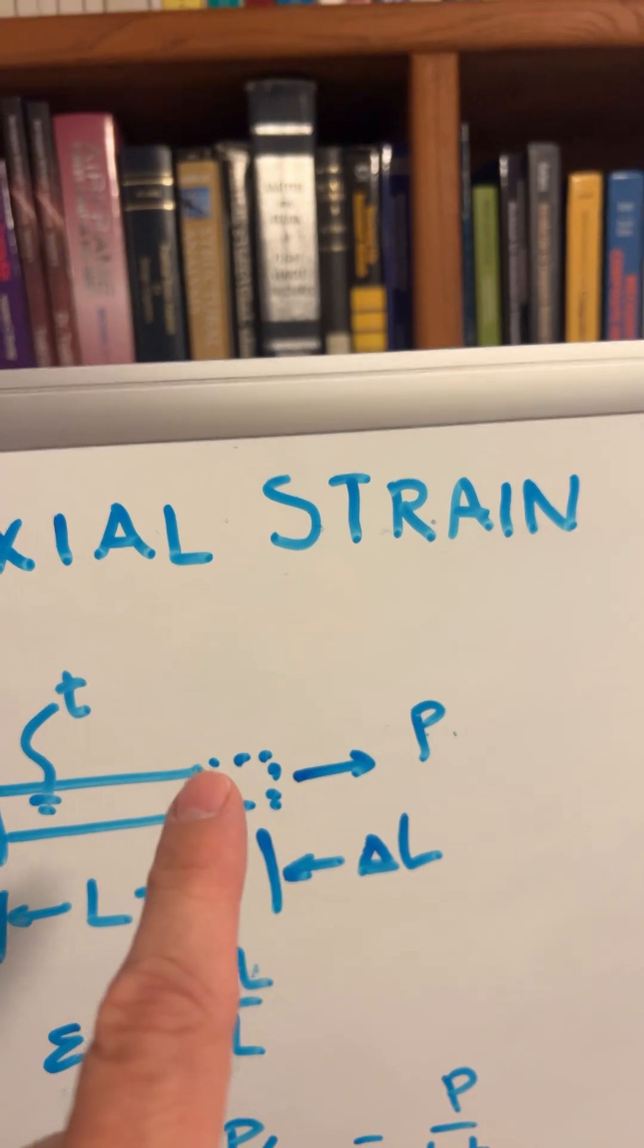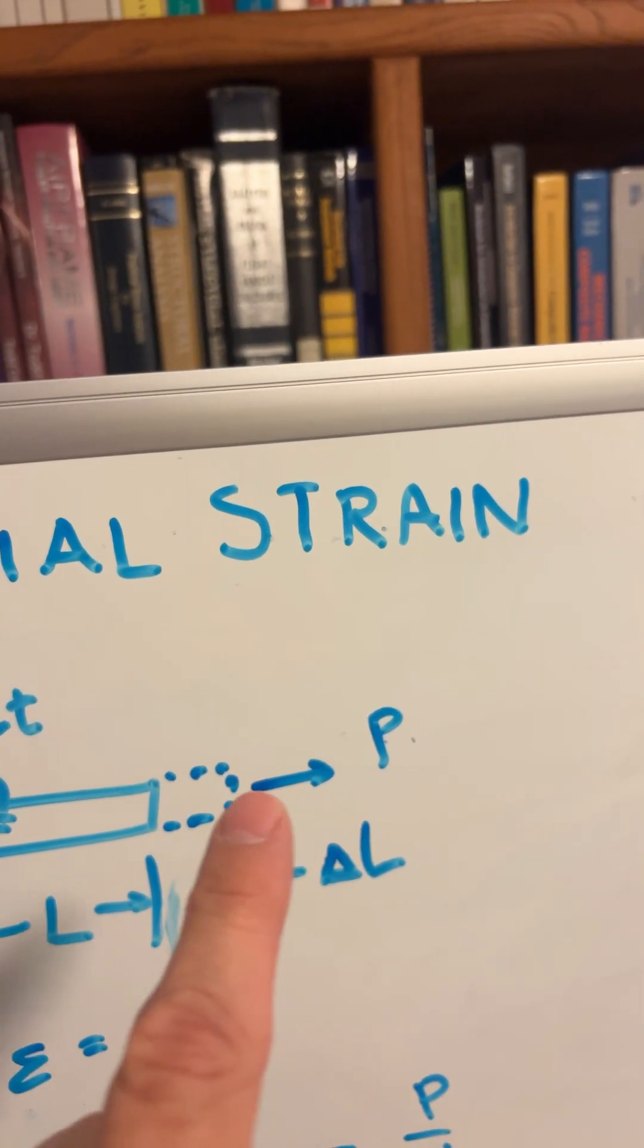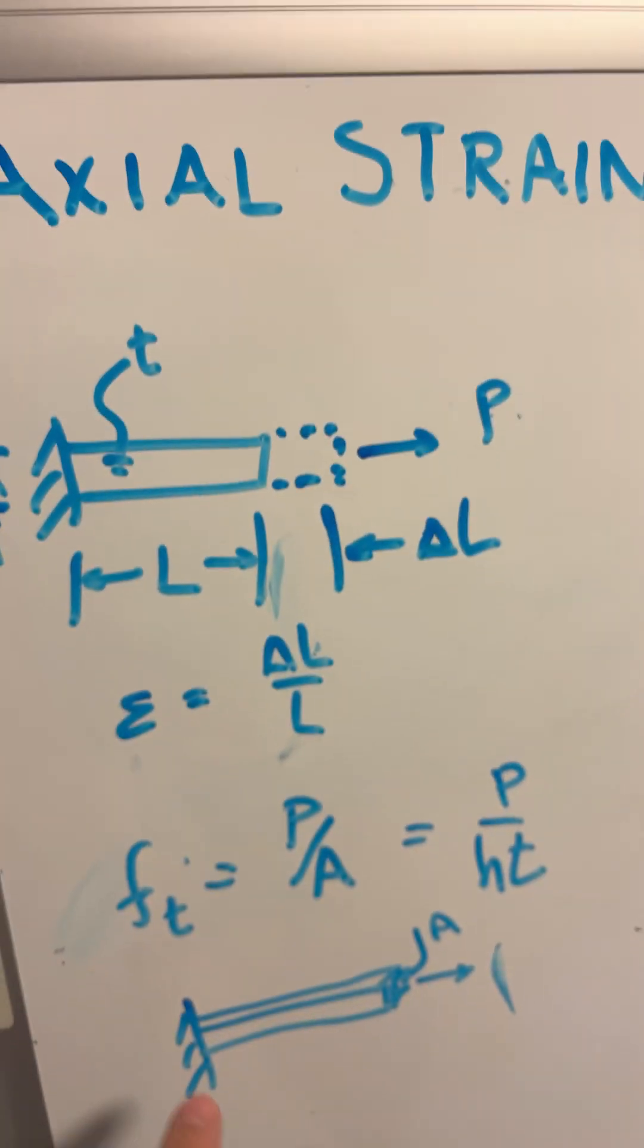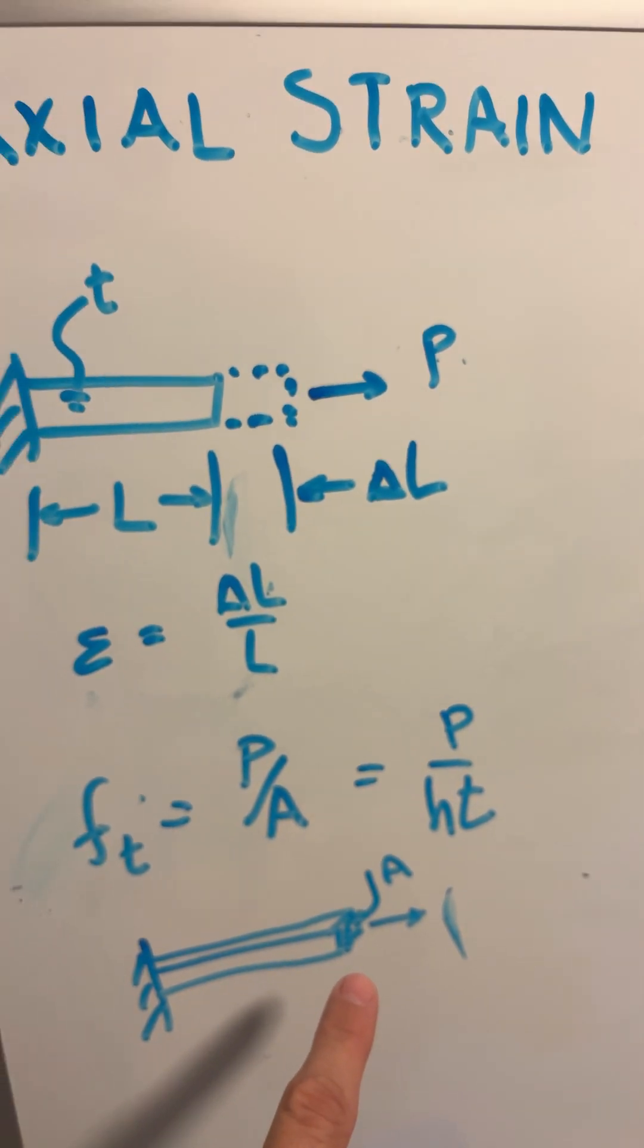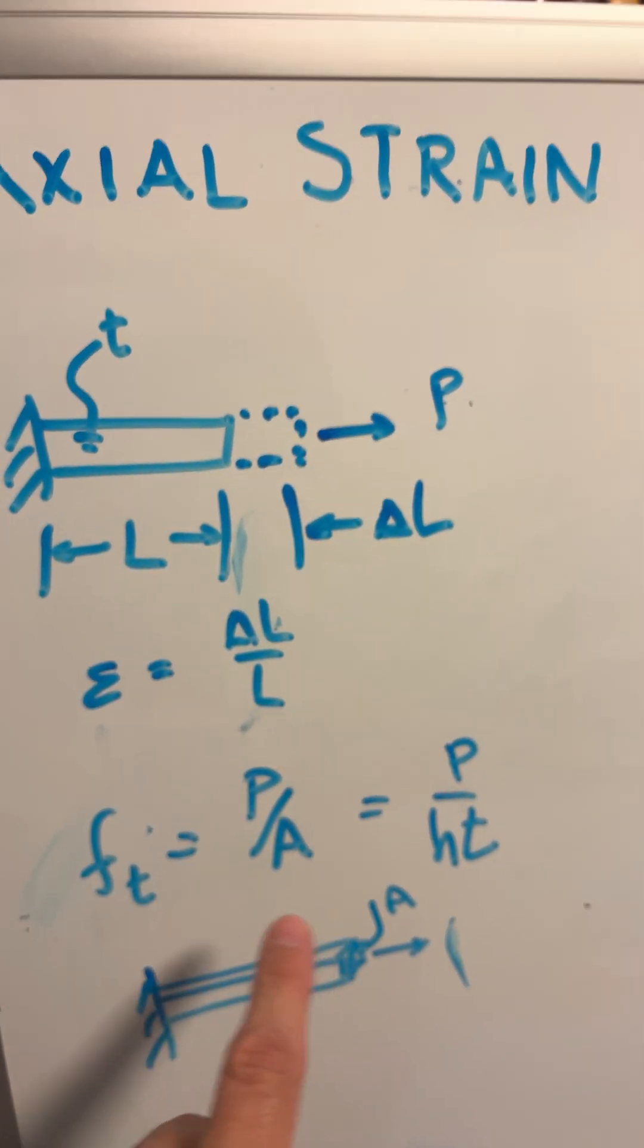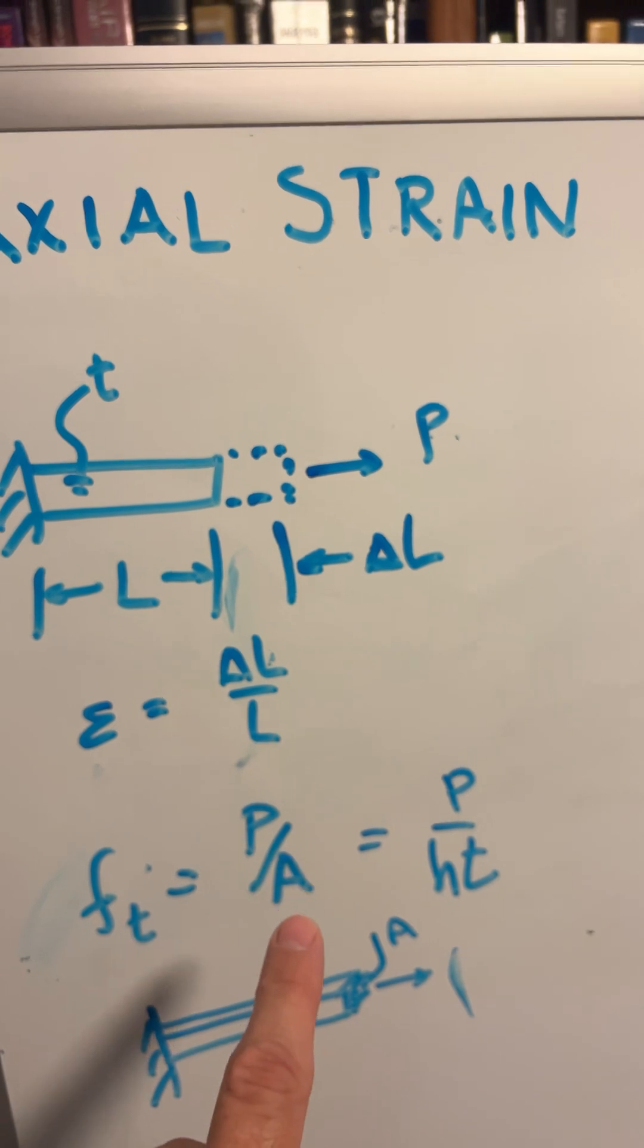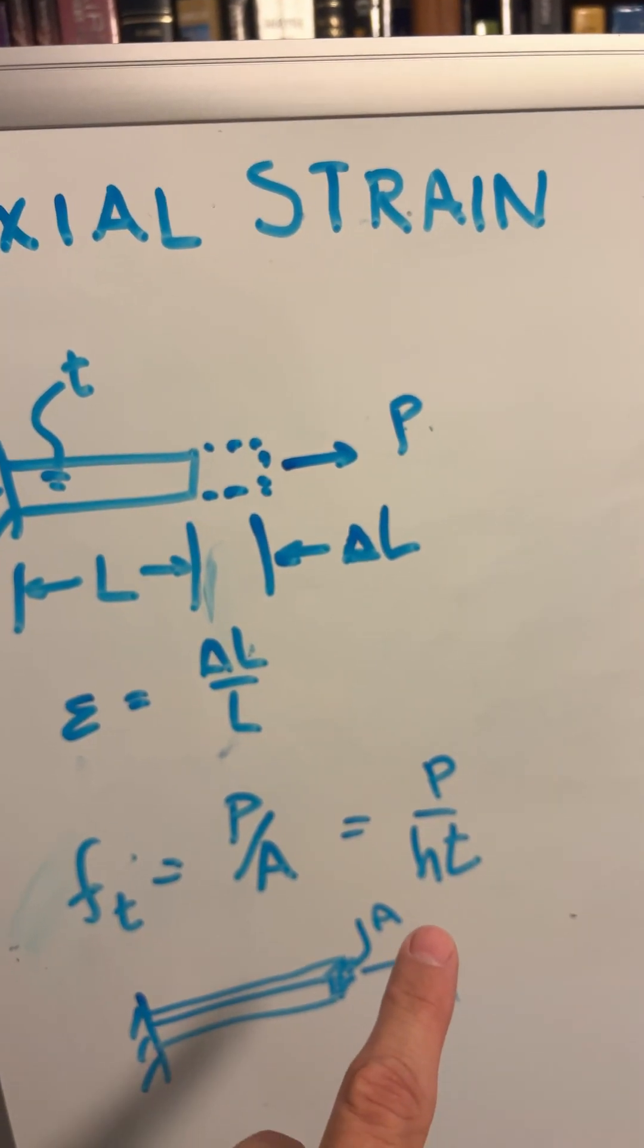The stress, if we look at that little area, you'll notice this force is acting on a perpendicular area of dimension H, T. The stress is just P over A, which is P over H, T. That is how you do axial strain and stress.